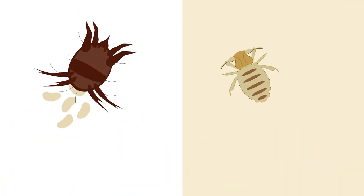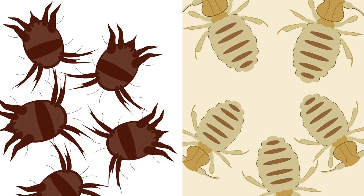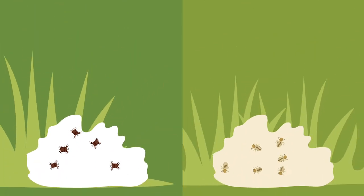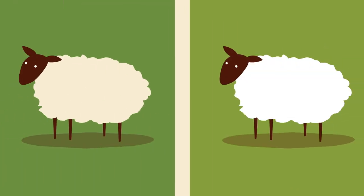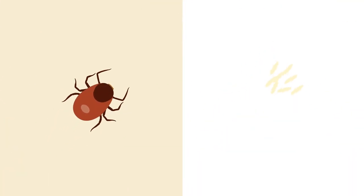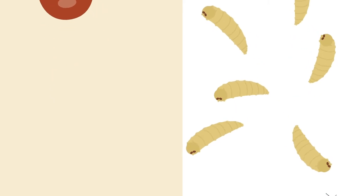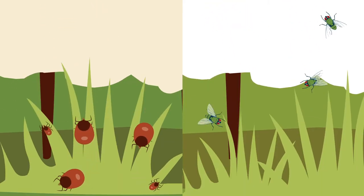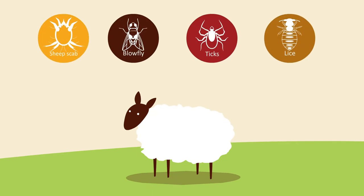Sheep scab mites and lice complete their whole lifecycle on the sheep and only survive for a short period of up to 18 days off the animal. In contrast, ticks and blowfly only spend a part of their life cycles feeding on the animal and spend the rest of the time off the animal in the environment. It's really important that you know which parasites are present so that you can effectively target the right treatment for the right parasite.